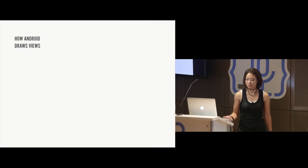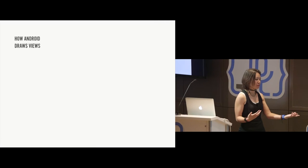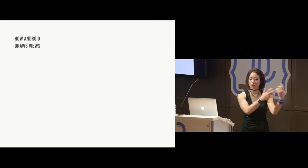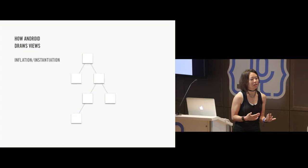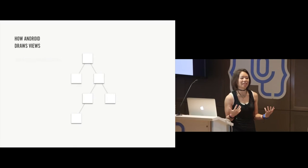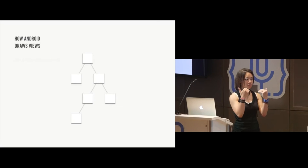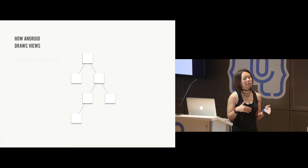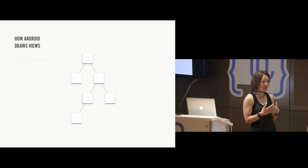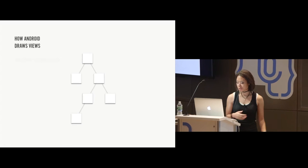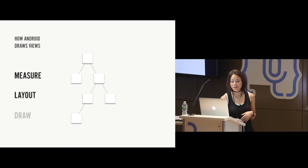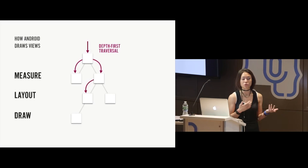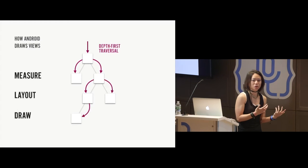Let's talk about how Android draws views. Your activity hierarchies and layouts start out with XML files, generally. There are a few steps that have to happen before that XML layout gets drawn on the screen. First, that XML layout has to be inflated and instantiated — all those views come to life inside your application. When they are instantiated, they form a tree, a view hierarchy of interconnected parent and child views. Once that view hierarchy comes to life inside your application, it's not quite ready yet. There are three things that have to happen: measure, layout, and draw. Each of these phases is basically a depth-first traversal of the tree, and each phase does something particular to the view hierarchy to get it ready to be drawn.